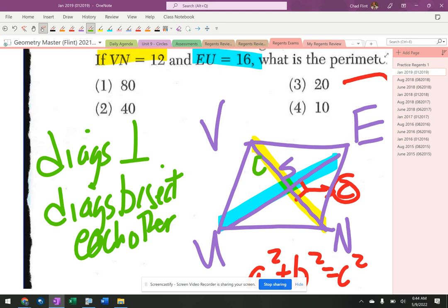Which means that this is six and this is six, and this is eight and this is eight. That's what that tells me. So then I can come over here.